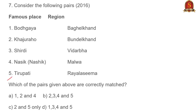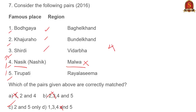Question seven: match famous places with regions. When statements exceed three or four, just locate one famous place correctly. Take Nasik — it is in Maharashtra. But the matched region is Malwa, which is in Madhya Pradesh. The state itself varies, so statement four is wrong. With statement four wrong, options B, D, and A go out, and the answer is C. The thumb rule: if there are more than four statements, find one that is clearly incorrect.